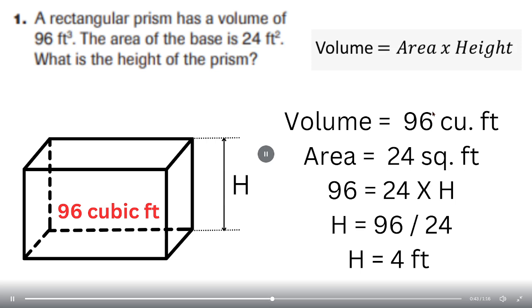Volume is 96 cubic feet. The area is 24 square feet. So 96 equals 24 times H. If you bring 24 on the other side, it will become 96 divided by 24. That will be the height.